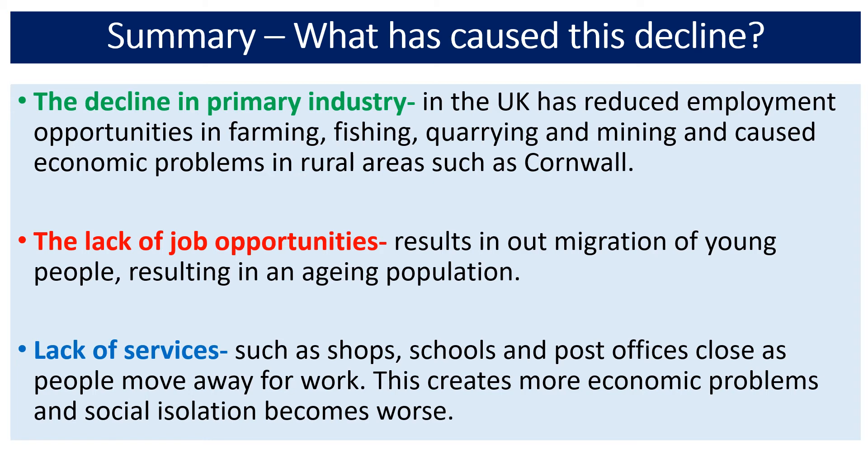In summary, Cornwall has experienced decline because of the fall in primary industries. The lack of job opportunities means lots of young people are moving out, leaving behind an ageing population. There are also fewer services — shops, schools, post offices — as people move away for work, which creates more economic problems and social isolation, similar to what we see in Turling.